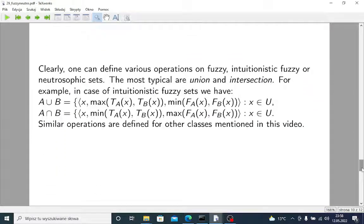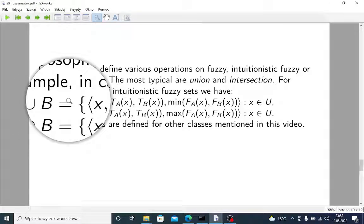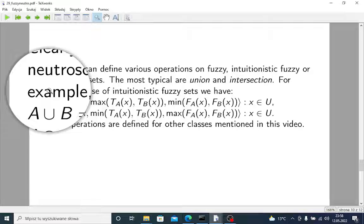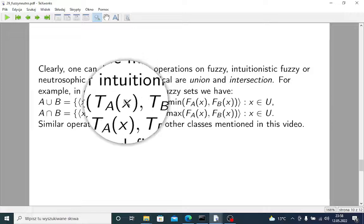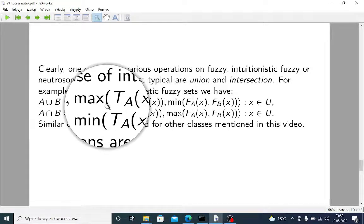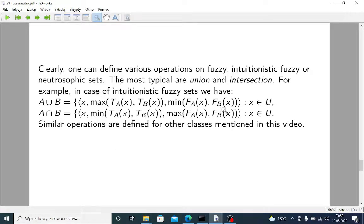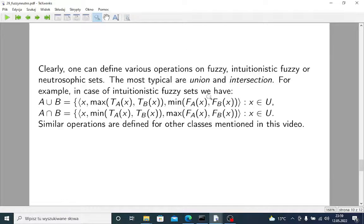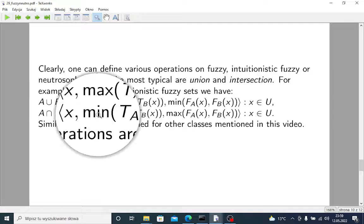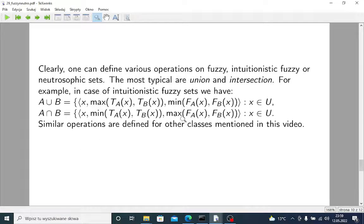And one can define various algebraic operations on those sets, on fuzzy and intuitionistic fuzzy and neutrosophic sets. The most typical are of course union and intersection or rather analogies of union and intersection. For example, in case of intuitionistic fuzzy sets, union is defined in the following manner: you take your x and then you take two functions of A and B with x as your argument and you are looking for their maximum as it's written here, and for the minimum when it comes to the falsity function.